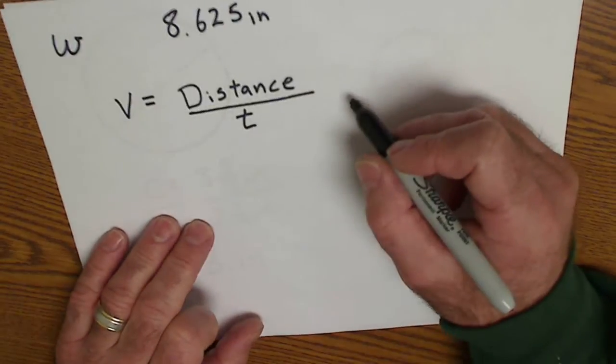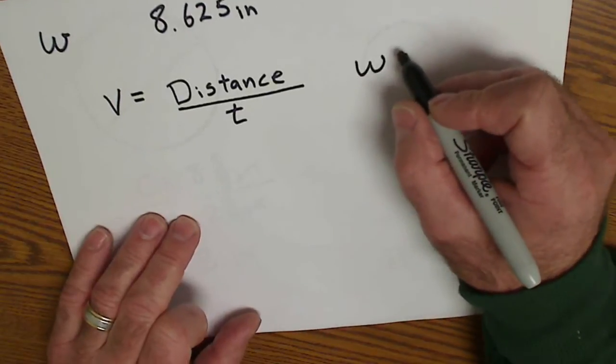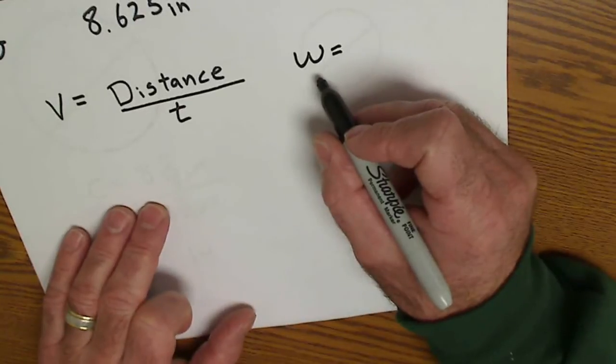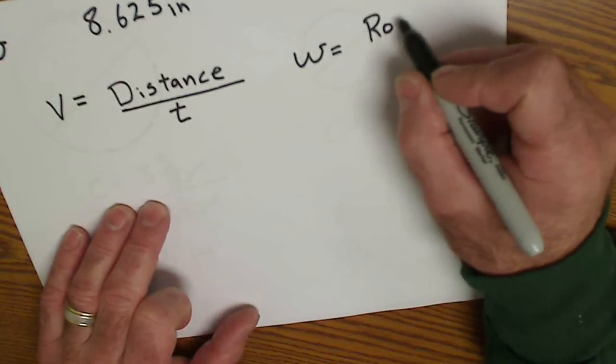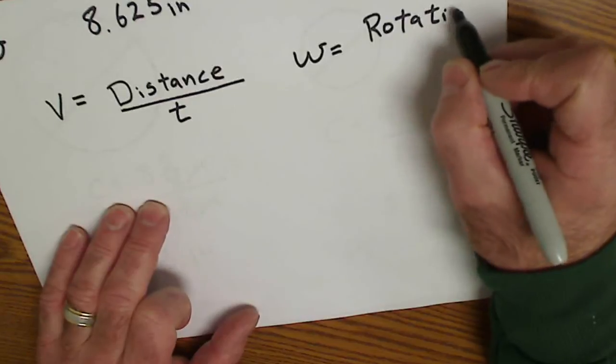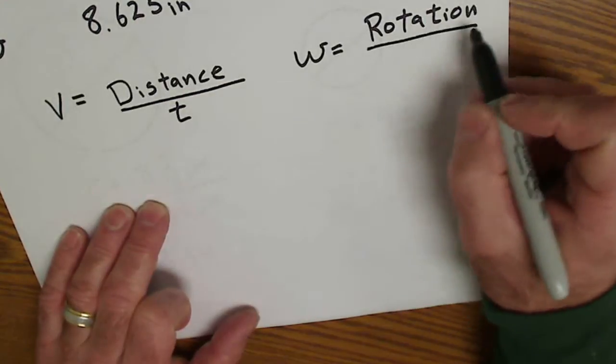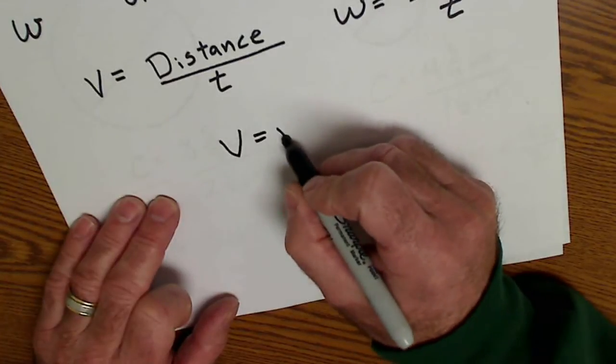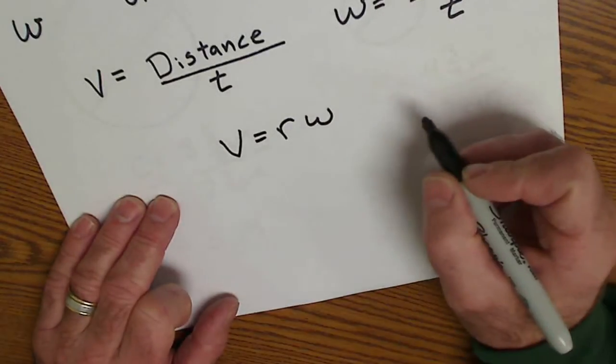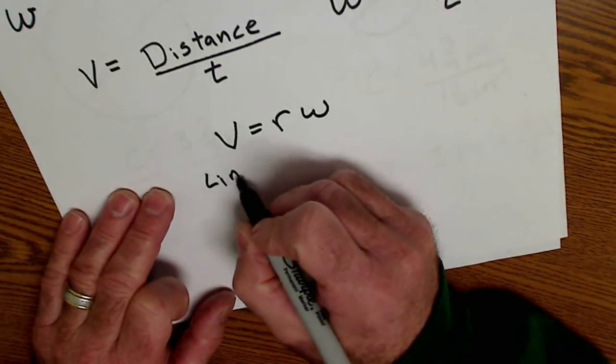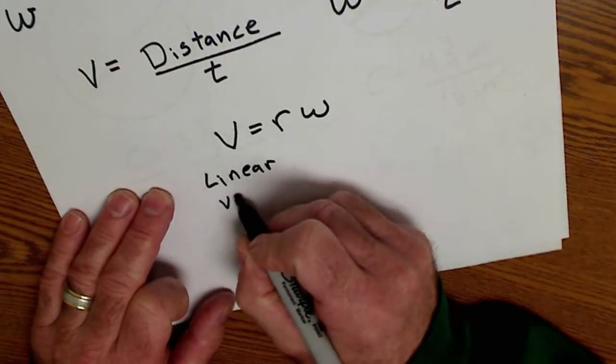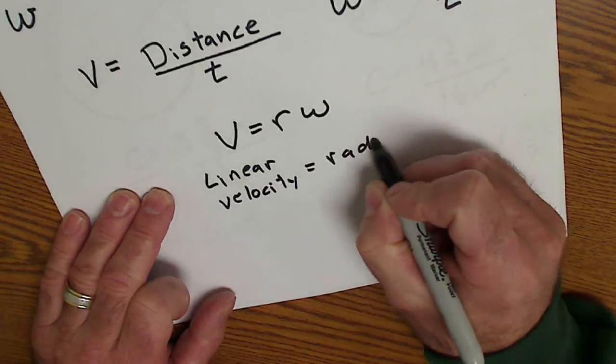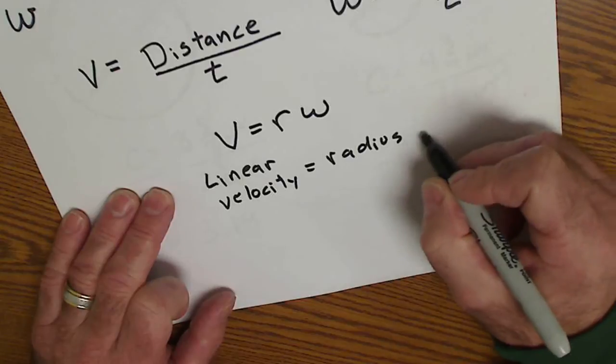So that's linear velocity and our other variable is angular velocity. Angular velocity, represented with a lowercase omega, is some sort of rotation over time. How the two are related to each other is the equation: linear velocity equals the radius times angular velocity.